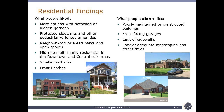Residential: what people liked includes more options for housing, single-family houses with detached or hidden garages to reduce the presence of the automobile on the street, protected sidewalks and pedestrian-oriented amenities, parks, open spaces, mid-rise multifamily in the right locations, and smaller setbacks with front porches. The two-story home with a front porch scored surprisingly high. What people don't like includes older dilapidated housing, front-facing garages, and lack of sidewalks and landscaping.